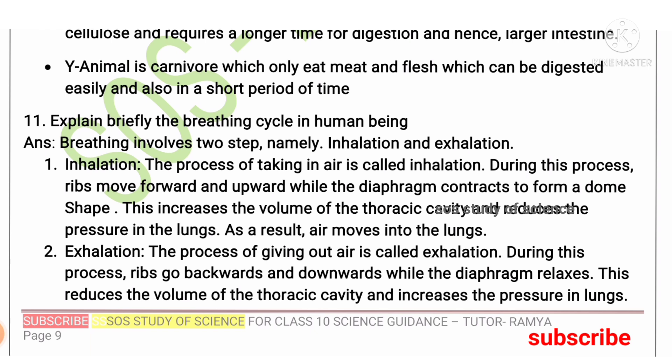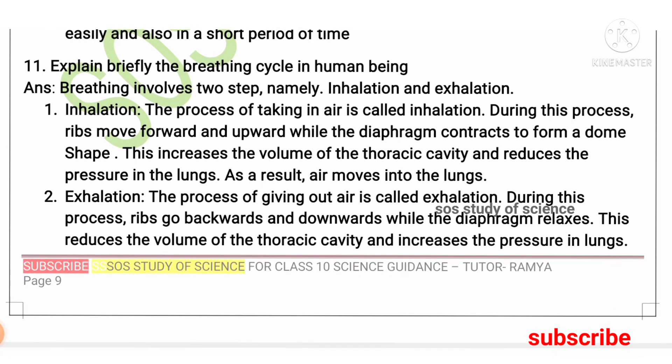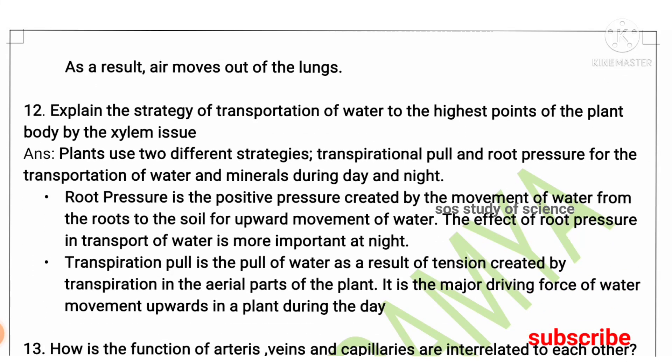Moving to the eleventh question: explain briefly the breathing cycle in human beings. Breathing includes only inhalation and exhalation. During inhalation, the ribs move forward and upward while the diaphragm contracts, increasing the volume of the thoracic cavity and reducing pressure in the lungs, so air moves in. During exhalation, the ribs go backward and downward, the diaphragm relaxes, reducing thoracic volume and increasing lung pressure, so air moves out of the lungs.